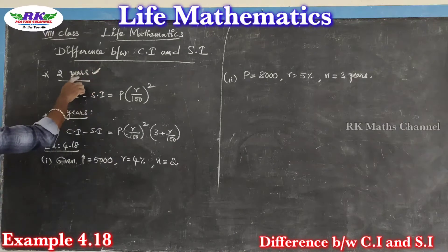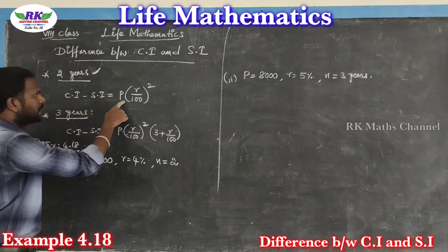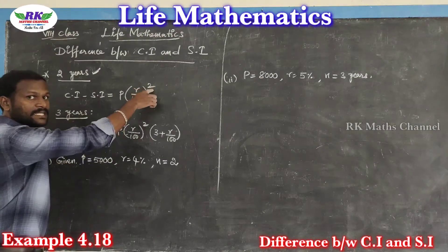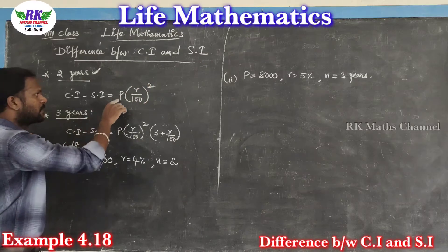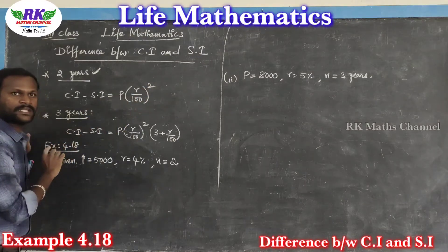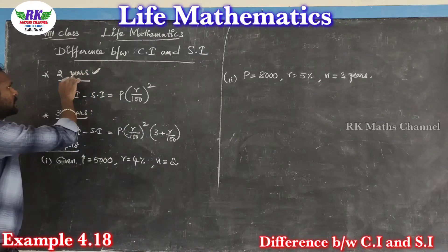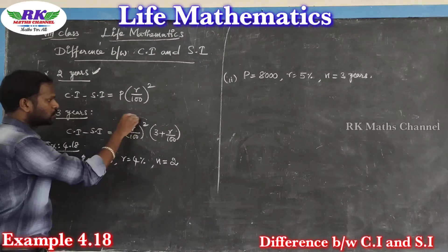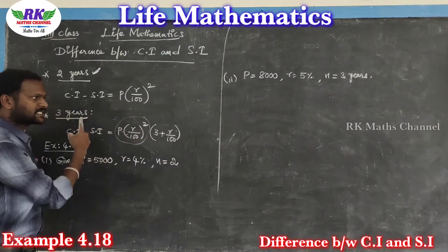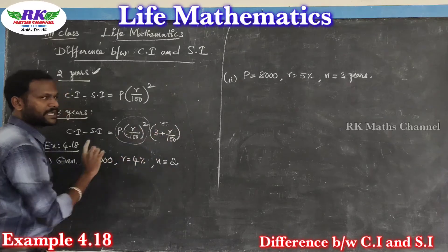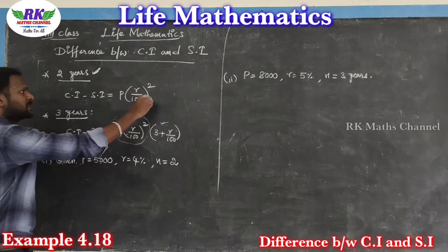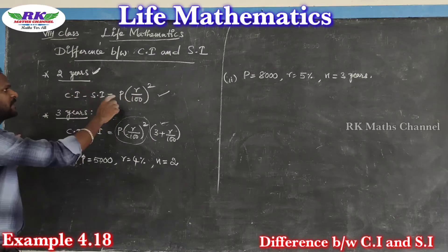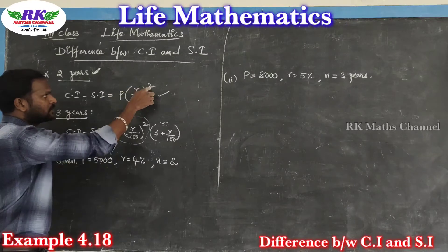For a time period of two years, Formula one: P into R by 100, whole square. This is the formula for two years.